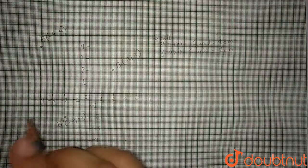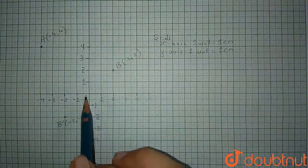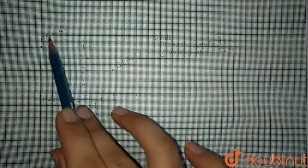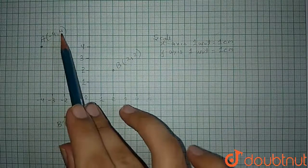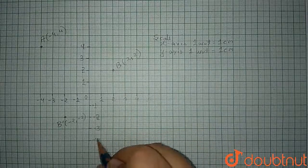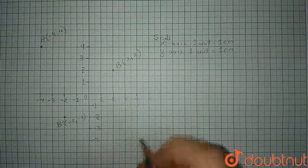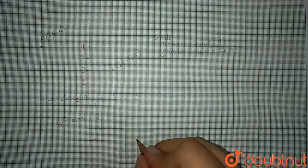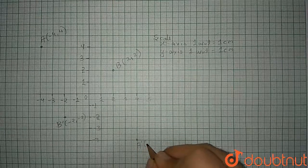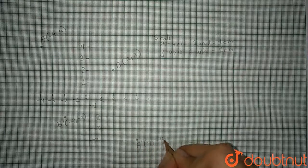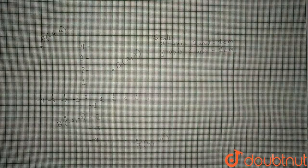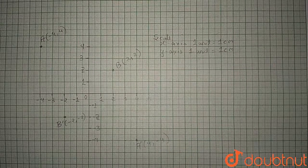Now let us reflect A in the origin — again only the sign will change. So A(-4, 4) becomes A'(4, -4). So A' at (4, -4) is right here.